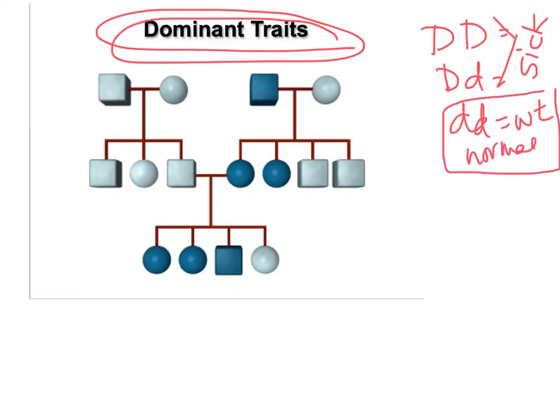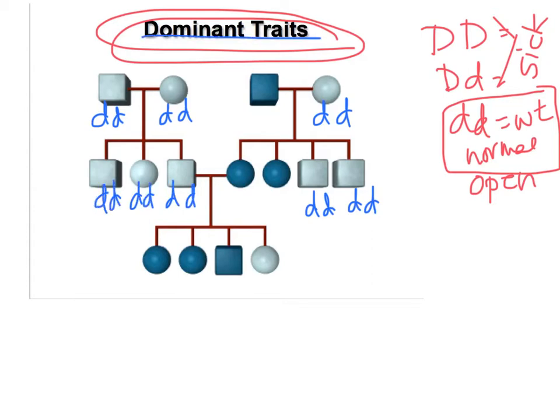Okay, little d, little d, which ones are these guys? The not affected, the opens. So what would we do? We'd go immediately and fill in all of the open squares and open circles with the genotype we know. All right, that's all they can be. It's a dominant trait. Whoops, forgot that little guy right there.